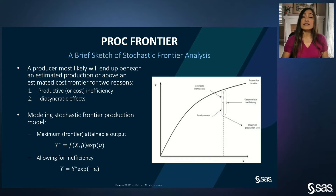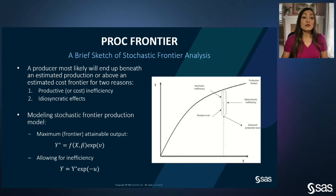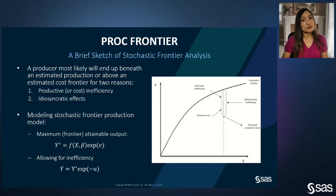A production of a good is described by the equation for y-star, the maximum attainable output produced by a firm given available vector of inputs x. F and parameter vector beta characterize the production technology. V is an iid error term distributed as normal. The equation for y shows how observed output is modeled to allow for inefficiency, including u, a non-negative iid technical inefficiency term that can be exponential, truncated normal, or half normal. The logged linear transformation of this equation is used. The cost model is similar, except the inefficiency term enters with a positive rather than negative sign.